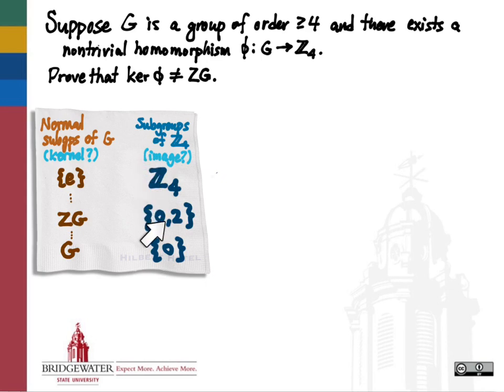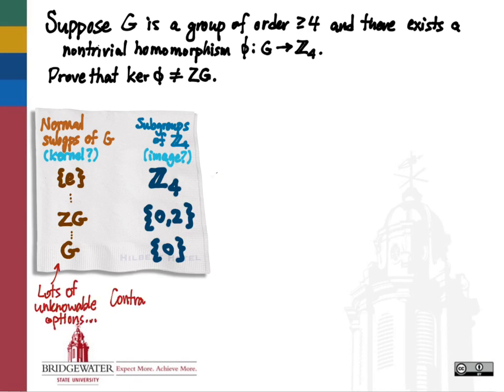On the other hand, we do know the subgroups of Z₄. Since Z₄ is abelian, all of its subgroups are normal. There are only three: the cyclic group Z₄ itself, the cyclic subgroup generated by 2 which has two elements, and the cyclic subgroup generated by the identity element which contains only the identity. Because we don't have concrete information about g's normal subgroups, there are a lot of unknowable options on that side.